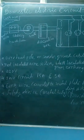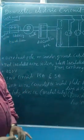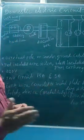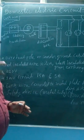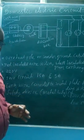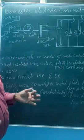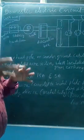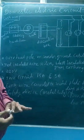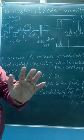So, now we are at the end of the chapter — Magnetic Effect of Electric Current. In the previous class, we studied about dynamo: what is dynamo, what is the principle of dynamo, what are the two types of dynamo, and how dynamo works. All those things we have studied. Now, we can move on to the last concept.